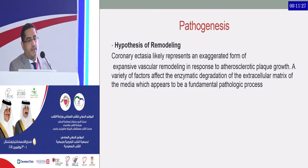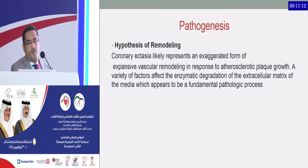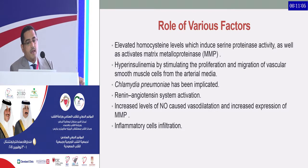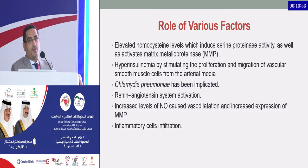The pathogenesis of ectasia is based on the remodeling hypothesis, representing an exaggerated form of expansive vascular remodeling in response to atherosclerotic plaque growth. Various factors affect enzymatic degradation of the extracellular matrix of the media, which appears to be a fundamental pathologic process. These factors include elevated homocysteine, hyperinsulinemia, Chlamydia pneumoniae, renin-angiotensin system activation, increased nitric oxide levels, and inflammatory cell infiltration.